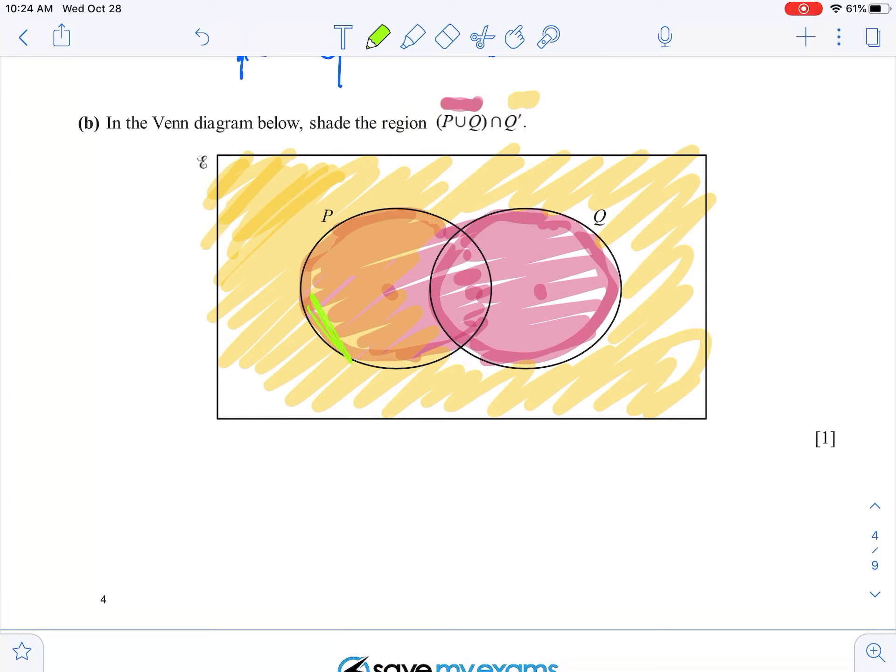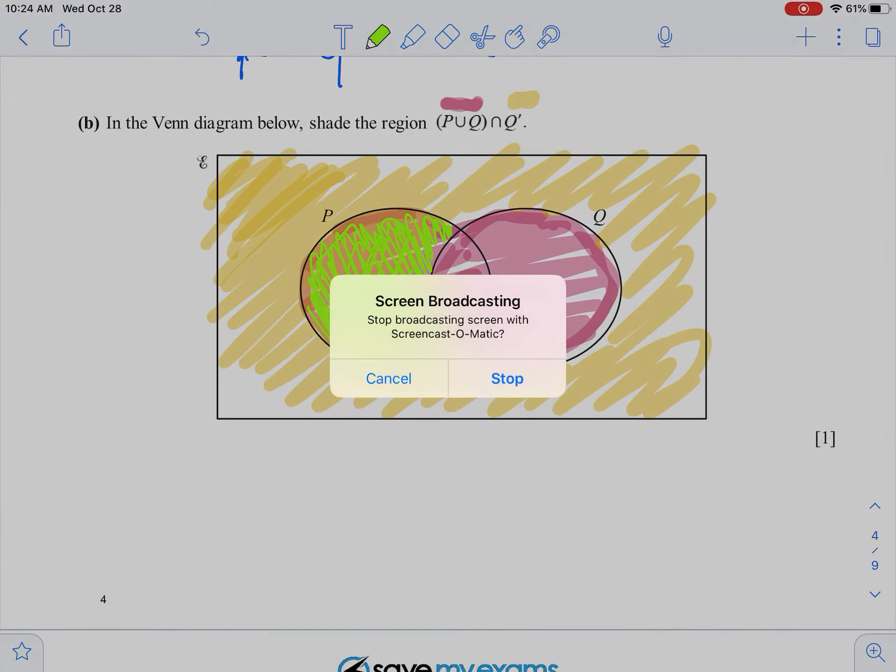So it's not the middle piece, it's just here. So this is P uniting with Q, then intersecting with not Q. So the green section is my answer.